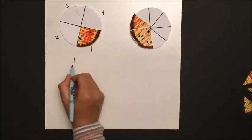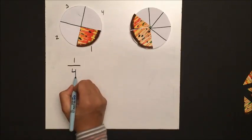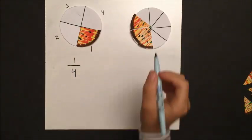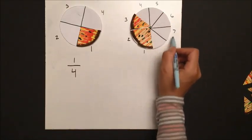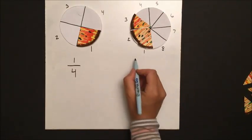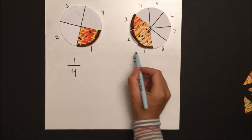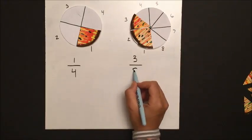Our first pizza has a possibility of four slices and we have one of them, so we have one fourth. Our second pizza has a possibility of eight slices and we have three of them, so we have three out of eight, which is three eighths.